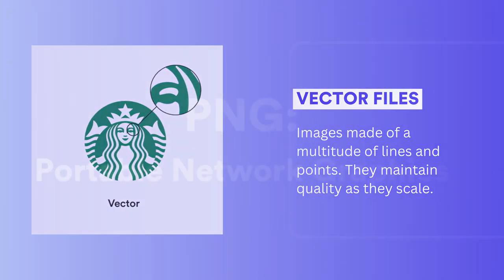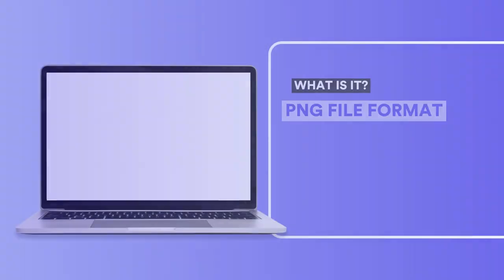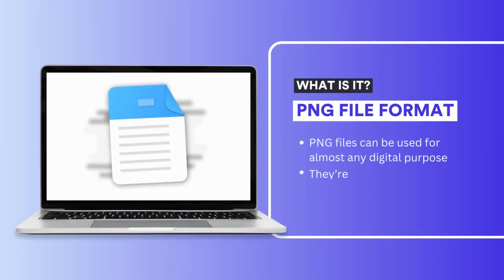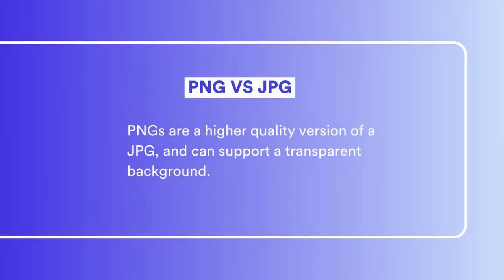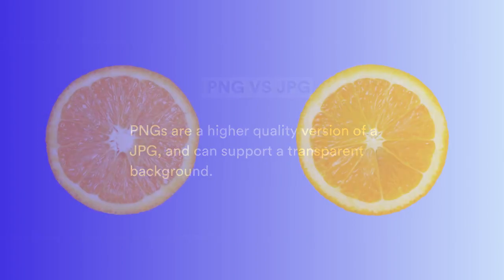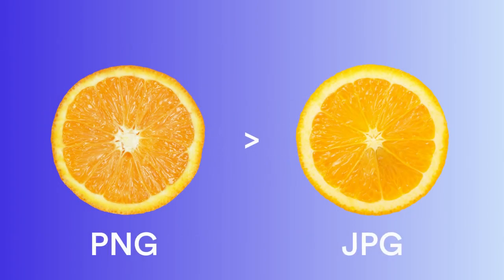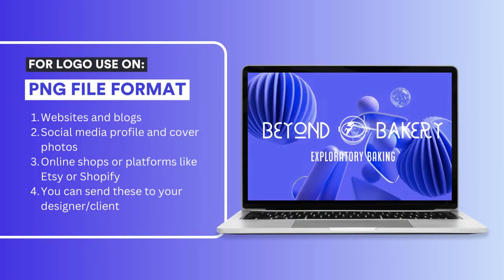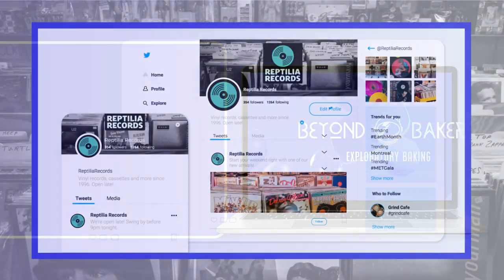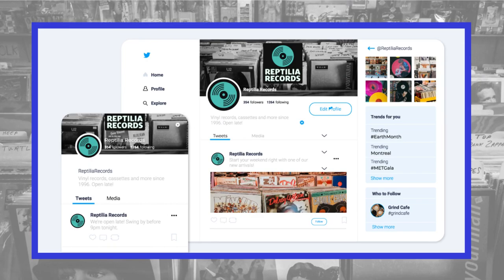Let's start with the PNG file format. This file type is perfect for almost any digital purpose and it supports transparent backgrounds. As a note, PNGs are a higher quality version of a JPG — they have more image data and transparency, so if you have a choice, always choose the PNG over the JPG for quality. Use PNG files to put your logo on websites, blogs, social media profiles, cover photos, and online shops.